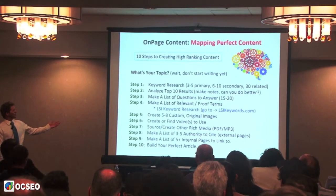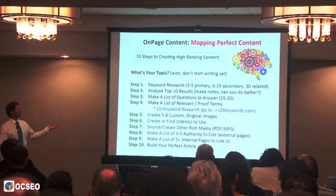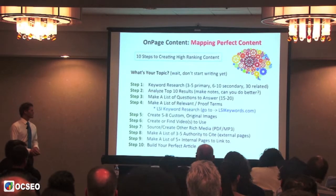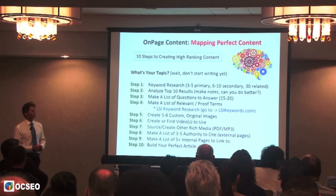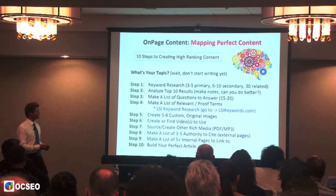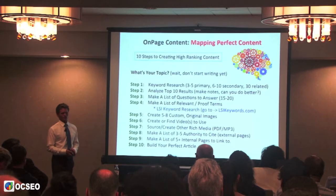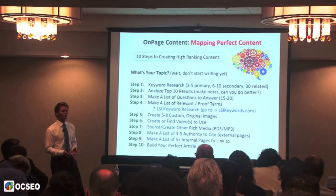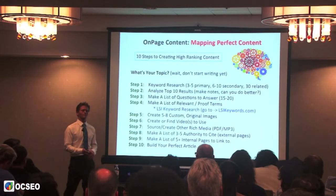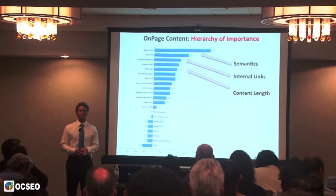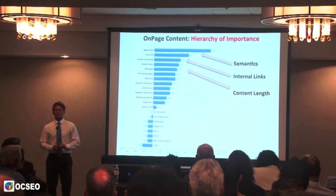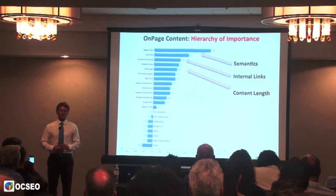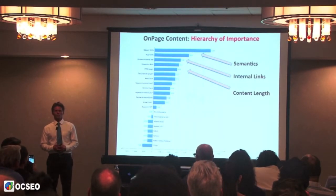Create images, create videos, source other content or rich media, make a list of external sites you can link to, make a list of internal pages you can link to, and then start building your article. In terms of importance, semantics, internal links, and content length are the most important.